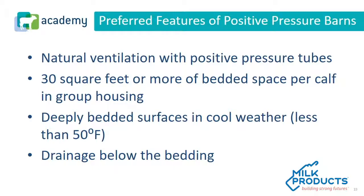We also need to think about bedded space per calf in group housing — about 30 square feet or more, and often closer to 40 square feet of total space per calf. We must always ensure good, clean, deeply bedded surfaces for calves, especially in cool weather. Controlling moisture in the building is always beneficial — even with deeply bedded surfaces, having drainage below the bedding helps move liquid away, lowering ammonia levels, urine, and manure exposure.